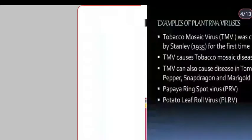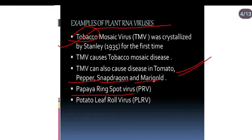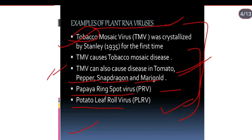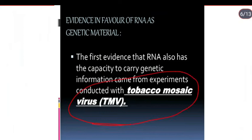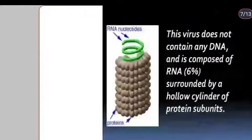Examples of plant RNA viruses: Tobacco Mosaic Virus (TMV) was crystallized by Stanley in 1935 for the first time. TMV causes tobacco mosaic disease and can also cause disease in tomato, pepper, snapdragon, and marigold. Papaya Ring Spot Virus (PRV) and Potato Leaf Roll Virus (PLRV) are other examples. We will use TMV to prove that RNA is the genetic material through experiments.